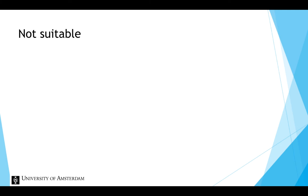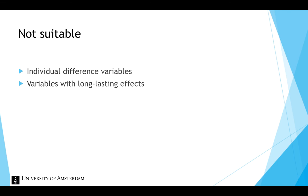Not all variables can be used as a within-factor in a repeated measures design. For example, individual difference variables such as gender cannot be used as a within-factor, because those cannot be manipulated. Variables that are also not suitable for repeated measures designs are variables with a long-lasting effect, such as alcohol. If we use repeated measures designs, we must be sure that the effects of the first level of the independent variable are gone before exposure to the second level, and so on.